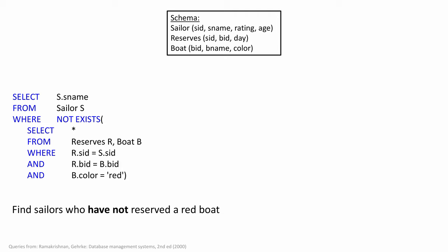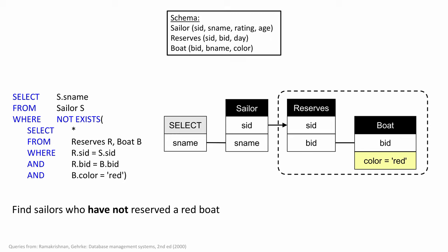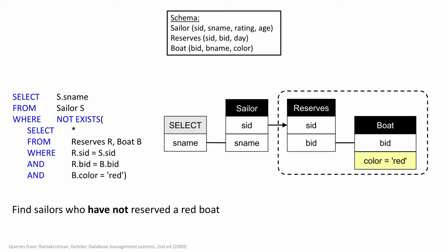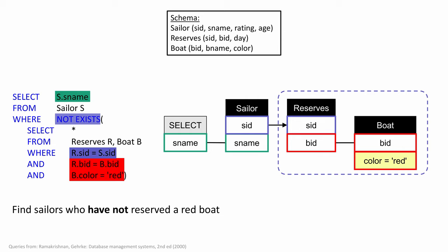Let's take a look at a slightly more complex nested query. The SQL shown finds sailors who have not reserved a red boat. The QueryVis diagram looks quite similar to the previous one with two major changes. First, the tables Reserves and Boat are enclosed by a dashed-line bounding box, denoting that a NOT EXISTS logical quantifier is applied to them. Second, the edge between Sailor and Reserves is directed, indicating that the join predicate s.sid = r.sid is between different nesting depths. The diagram reads: select s.name from the sailor table such that there doesn't exist a reservation of a red boat for that sailor — sailors that have not reserved a red boat.